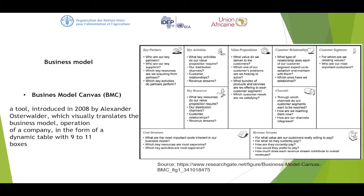Let's start with the business model canvas. This is basically a strategic management template used for developing new business models and documenting existing ones. It has nine building blocks and was introduced by Alexander, who later visually translated this business model into the business model canvas. It has nine to eleven blocks — it really varies.